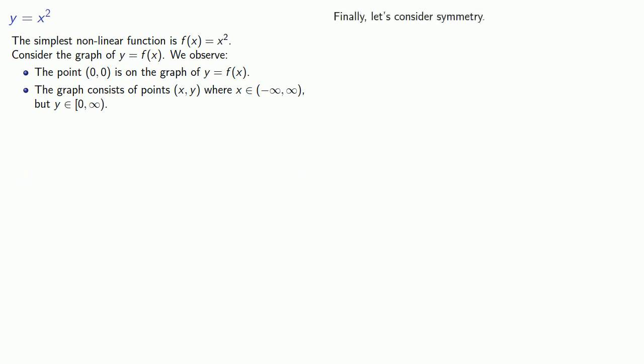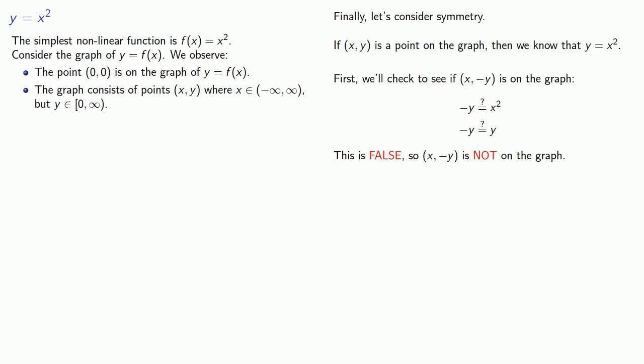Finally, let's consider symmetry. If (x, y) is a point on the graph, then we know that y equals f(x), which equals x squared. First we'll check for symmetry about the x-axis. We'll check to see if (x, -y) is on the graph. So we'll replace our y value with negative y and leave our x value alone. Now the question is whether or not this is a true statement. This statement says that wherever we see x squared, we can replace it with y. So the question is whether -y is the same as y. This statement is false. So (x, -y) is not on the graph, and the graph is not symmetric about the x-axis.